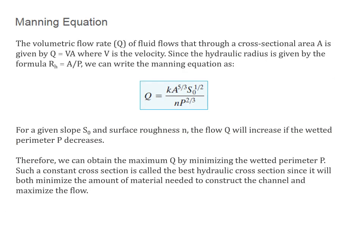The volumetric flow rate Q of a fluid that flows through a cross-sectional area A is given by Q equals V times A, where V is the velocity. Since the hydraulic radius is given by the formula RH equals A divided by P, we can rewrite the Manning equation in this more useful form. For a given slope S0 and surface roughness n, the flow Q will increase if the wetted perimeter P decreases. Therefore, we can obtain the maximum Q by minimizing the wetted perimeter P. Such a constant cross-section is called the best hydraulic cross-section, since it will both minimize the amount of material needed to construct the channel and maximize the flow.